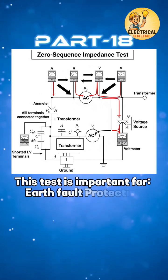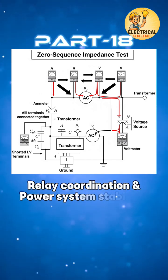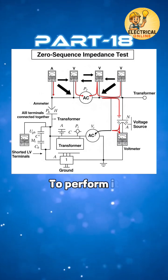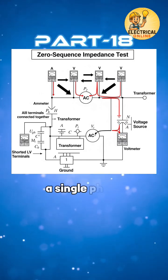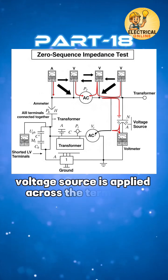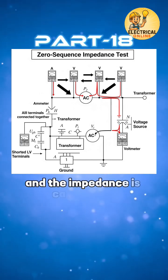This test is important for earth fault protection settings, relay coordination, and power system stability. To perform it, all three phase windings are connected in series. A single phase voltage source is applied across the terminals. The resulting current is measured, and the impedance is calculated.